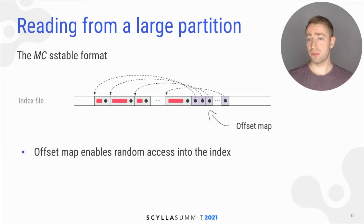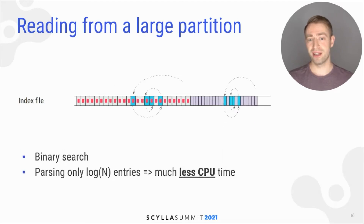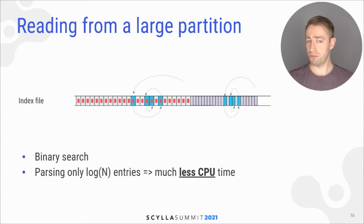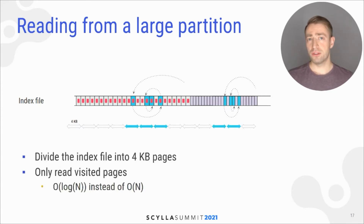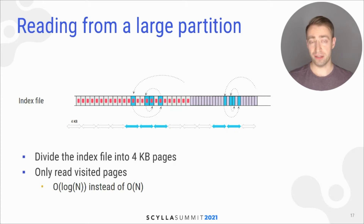The MC format comes to the rescue with its offset map, which allows random access into the index. If we have random access, we can do binary search, and that's exactly what we did. This way we can save a lot of CPU on parsing entries because we have much fewer entries to parse. We also divide the index into four-kilobyte pages and read from disk only the pages which are necessary.